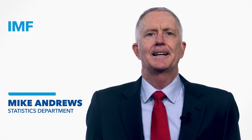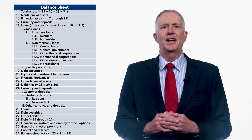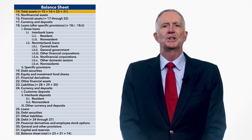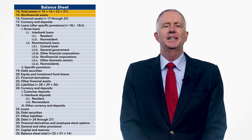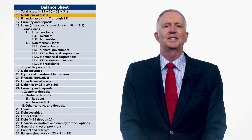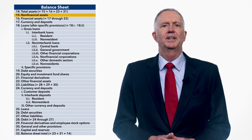Let's now learn about the definitions prescribed in Chapter 5 of the 2019 FSI's Guide for the Elements of the Sectoral Balance Sheets, or in IFRS terms, the Statement of Financial Position. We will use the deposit taker sector as our example. Many of the definitions used are also applicable to the other financial corporations, or OFC, subsectors. Total assets, line 14, is the sum of non-financial assets, line 15, and financial assets, line 16. Non-financial assets provide benefits to their owners but do not represent claims on other institutional units — examples are property and equipment. The balance sheets of deposit takers and OFCs generally will have a small proportion of non-financial assets.